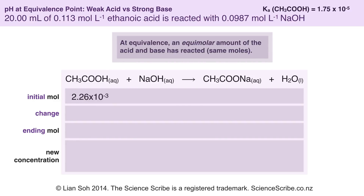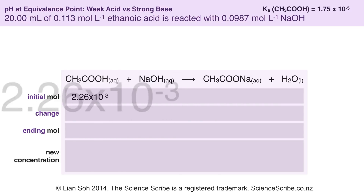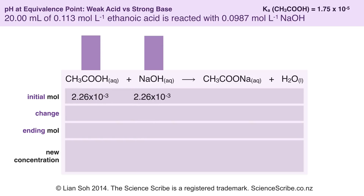At equivalence point I would have added just enough sodium hydroxide to react with all of the ethanoic acid in the flask. The equation shows a 1 to 1 ratio, so I need the same number of moles of sodium hydroxide as well. When the ethanoic acid and sodium hydroxide react in a 1 to 1 ratio, it also forms one mole of sodium ethanoate on the other side.